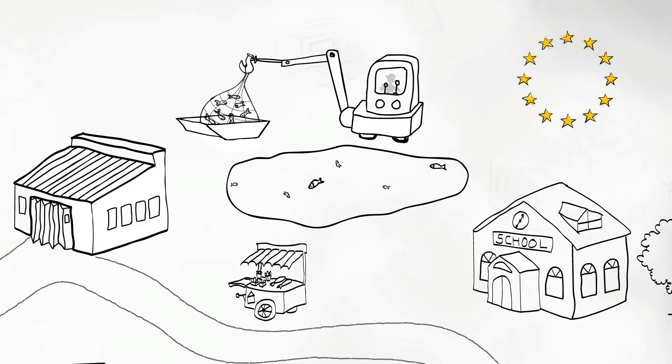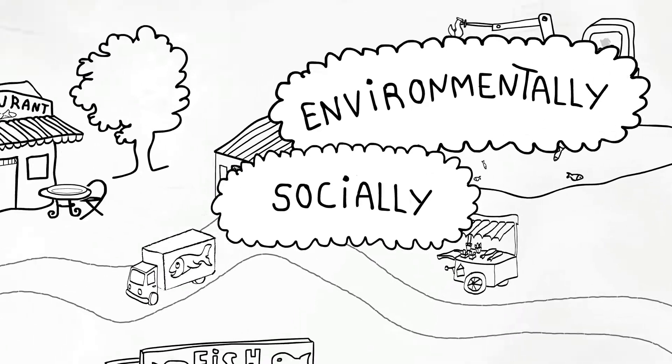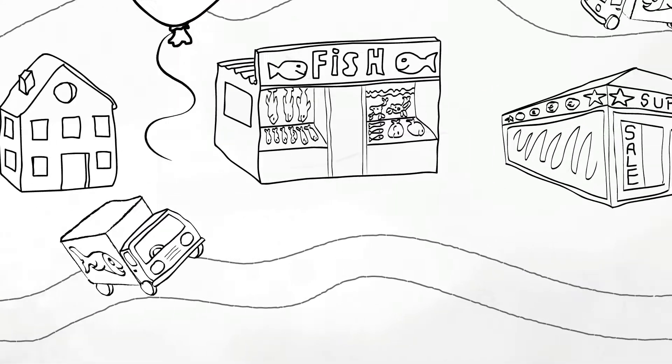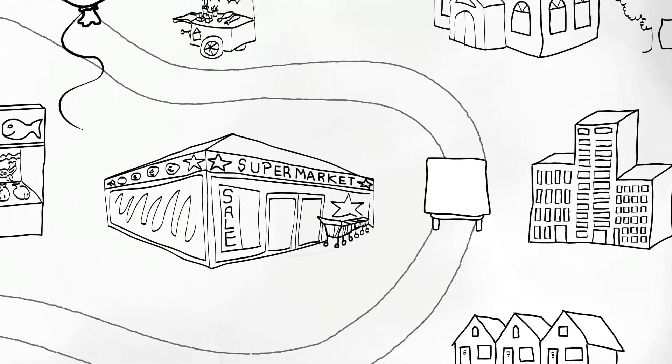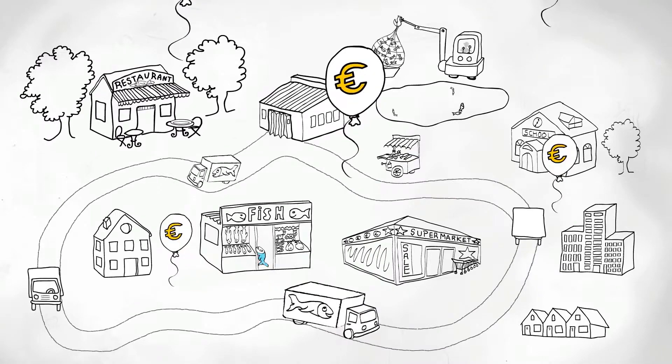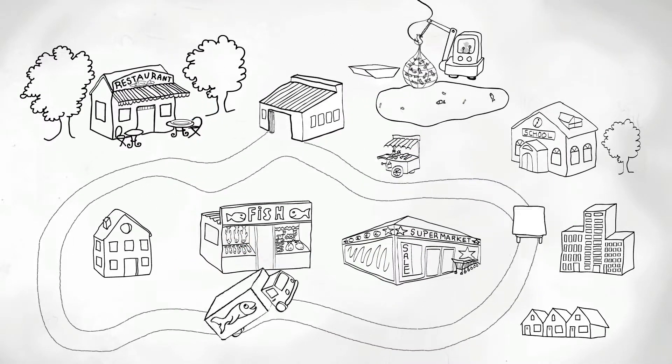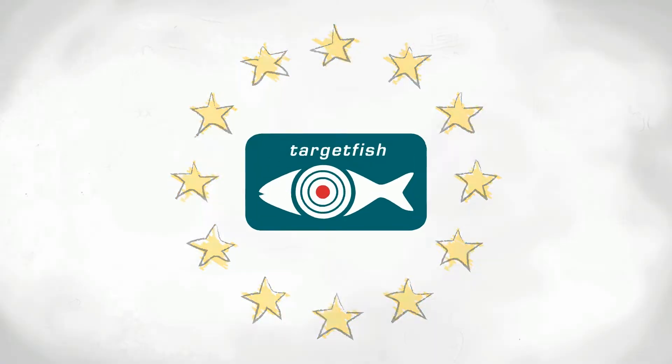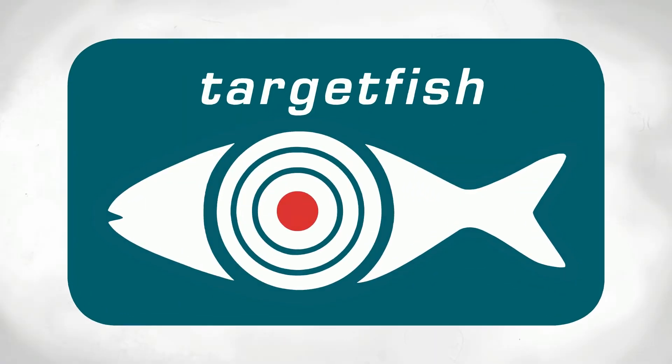The European Commission promotes an environmentally, socially, and economically sustainable aquaculture by funding research projects addressed to improving fish health and welfare, increasing the productivity and competitiveness of European aquaculture. In 2012, the European Commission funded a large collaborative research project known as TargetFish.